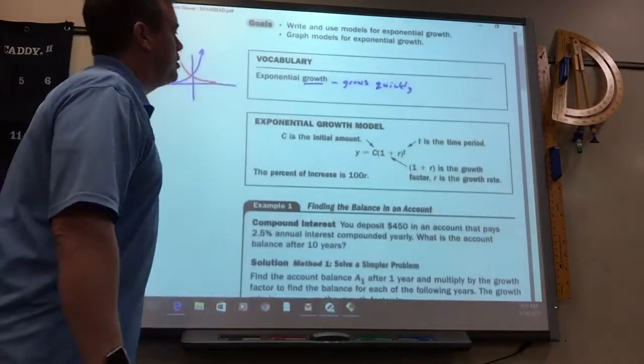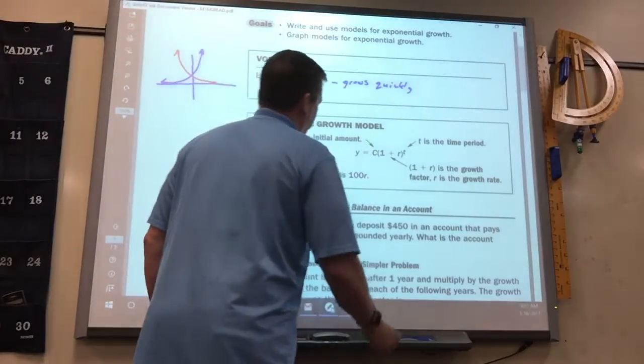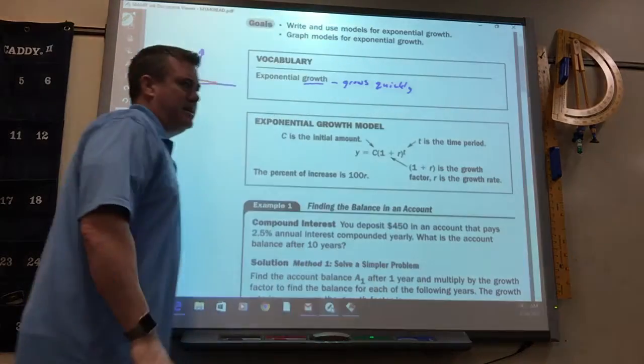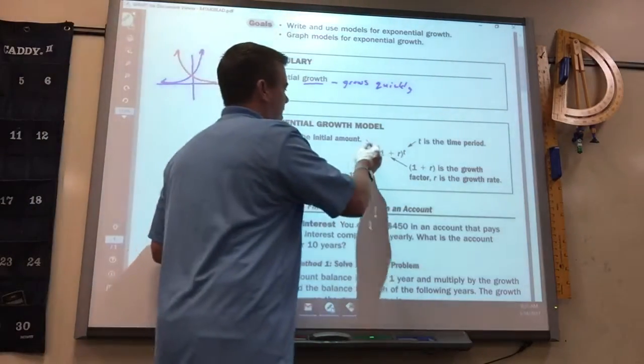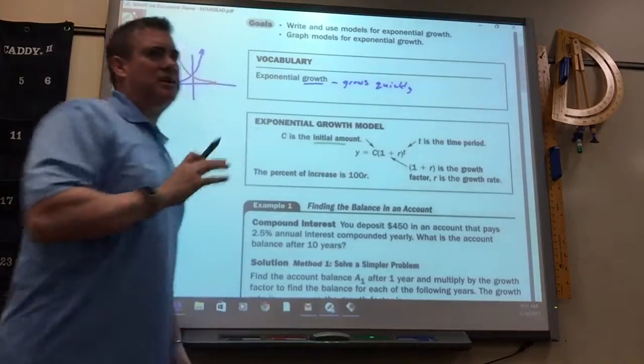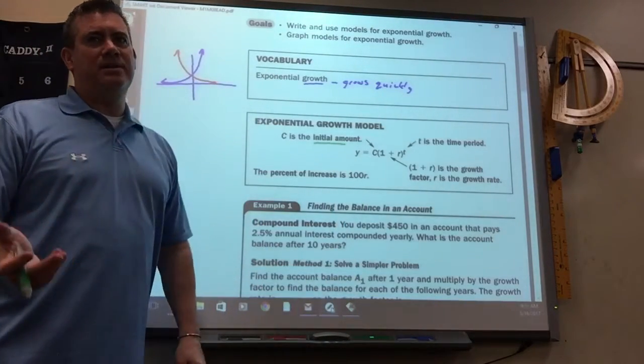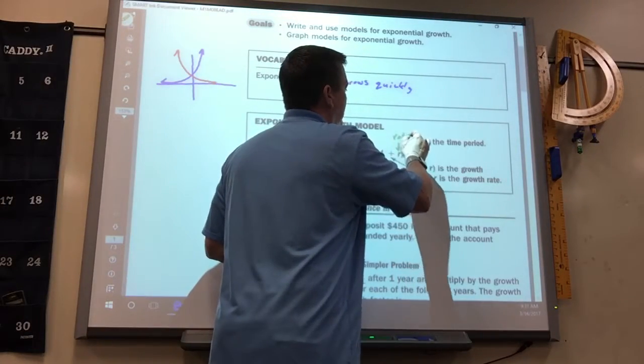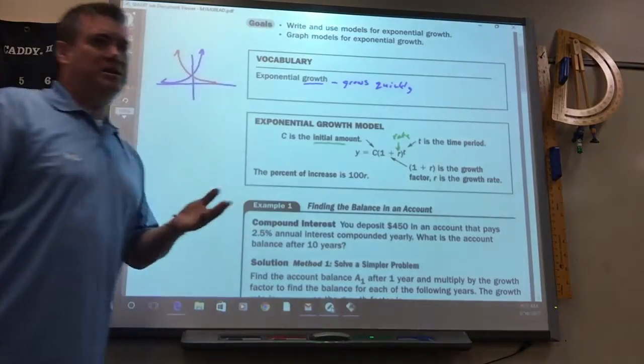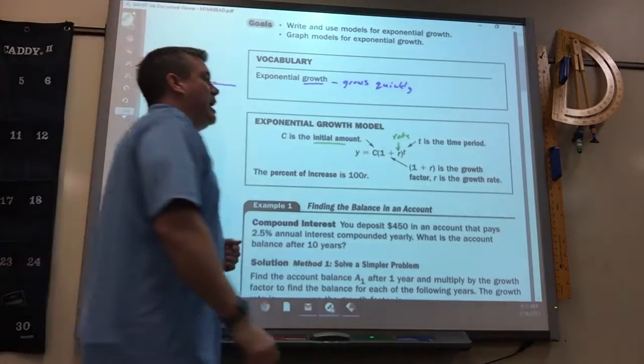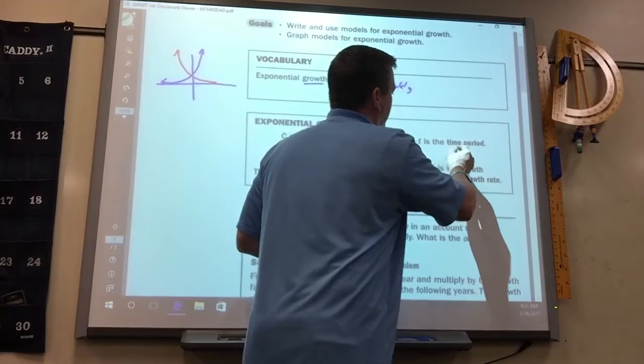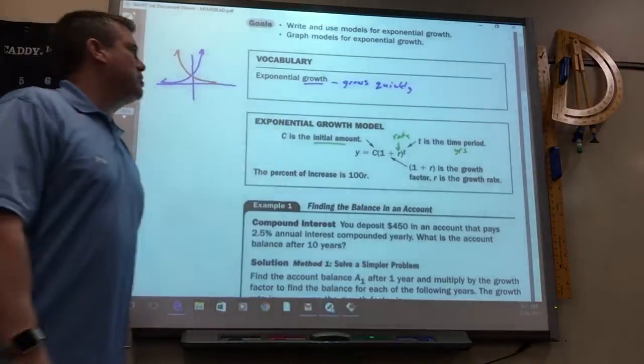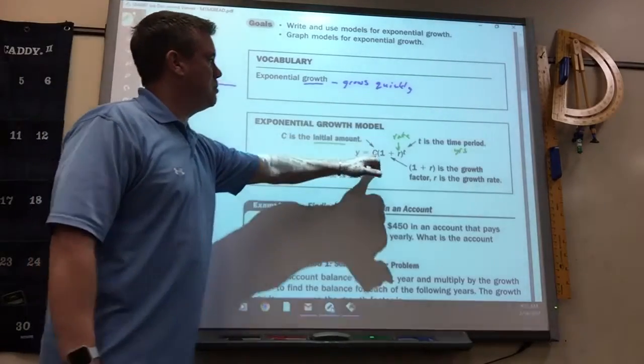So here is the growth model. Y equals some number times something raised to the T. C is the initial amount. That's what it starts at. And that's the same when we do decay next. It's the initial amount. R is the rate that it grows. And it'd be the same thing when it's a decay. And T is the time period in years.